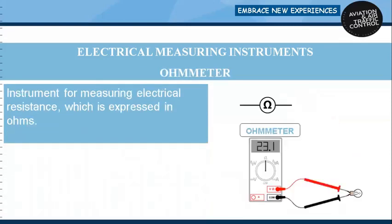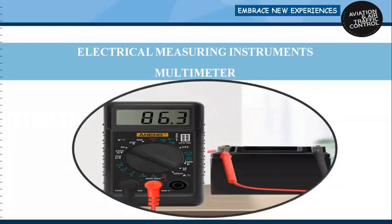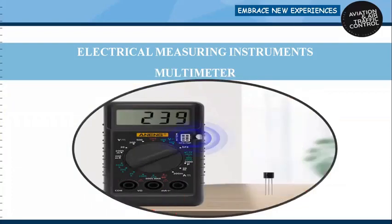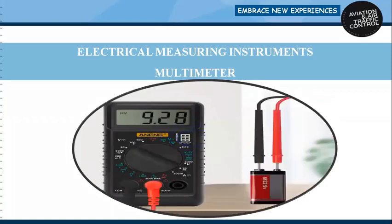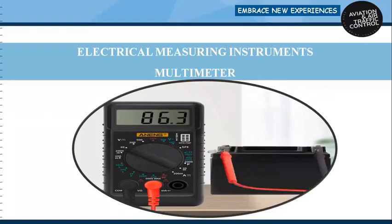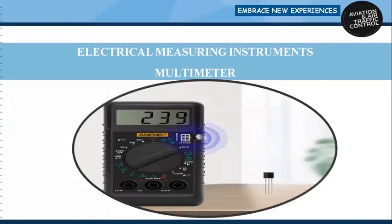An ohmmeter is an instrument for measuring electrical resistance, expressed in ohms. A multimeter is a measuring instrument that can measure multiple electrical properties — a typical multimeter can measure voltage, resistance, and current, in which case it is also known as a volt-ohm-milliammeter.